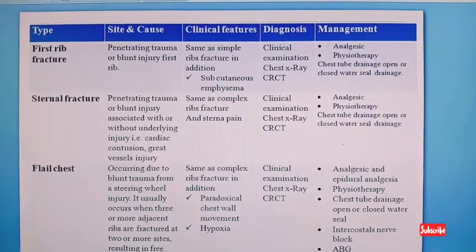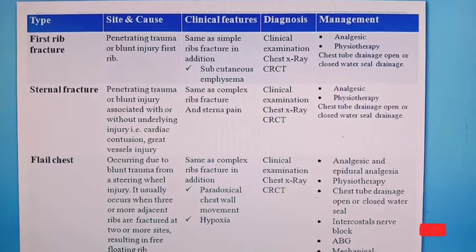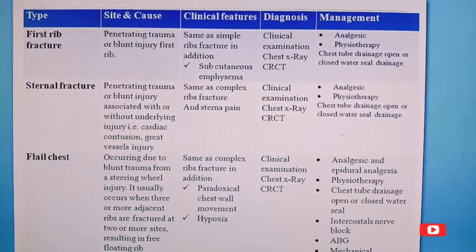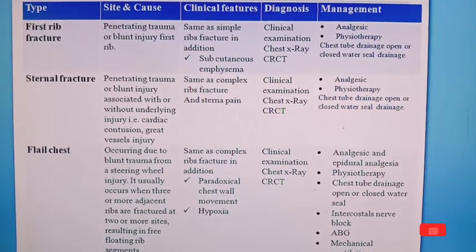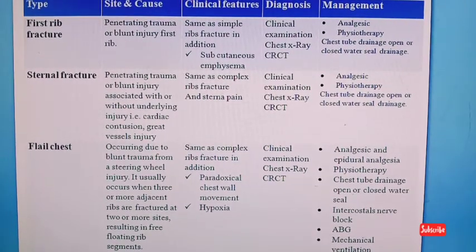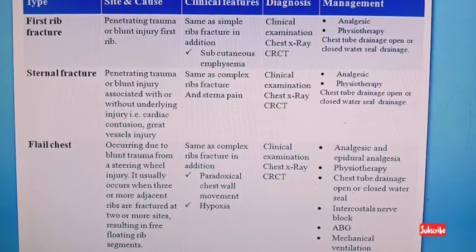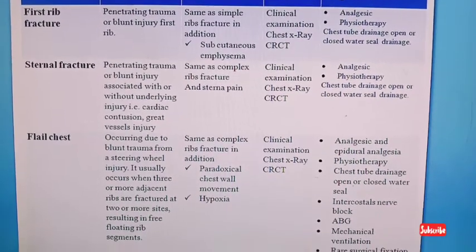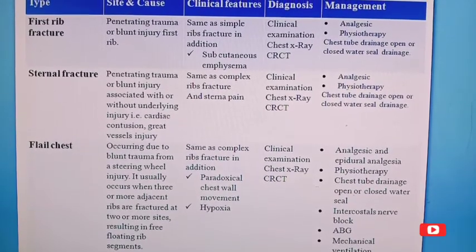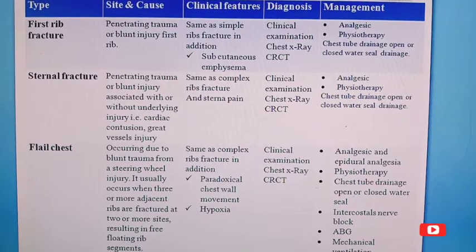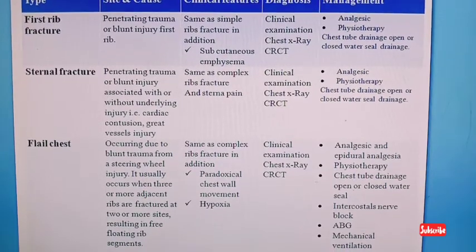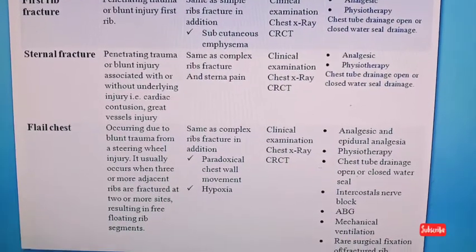First rib fracture is caused by penetrating trauma or blunt injury. Clinical features are similar to simple rib fracture. Confirmative diagnosis requires history taking, chest X-ray, and CT scan. Management includes pain management with analgesics, physiotherapy, and chest tube drainage with open or closed water seal drainage.